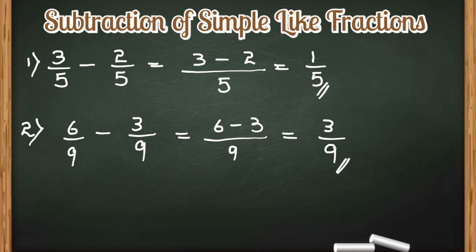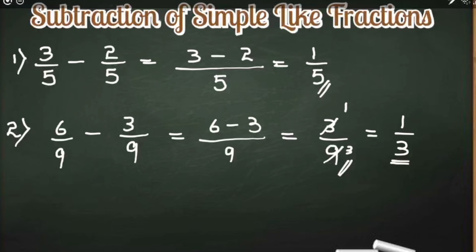You can stop here with 3 by 9, or if you want the simplest form you can do further cancellation. By canceling 3 and 9 using the table of 3, we get 1 by 3 as the answer — 3 ones are 3 and 3 threes are 9. So we got 1 by 3 as the final answer.